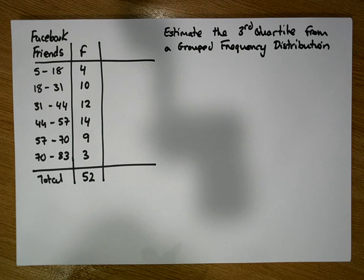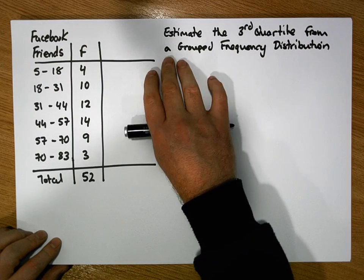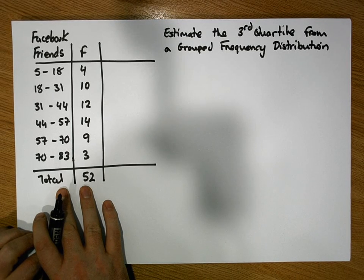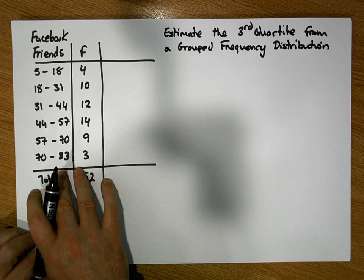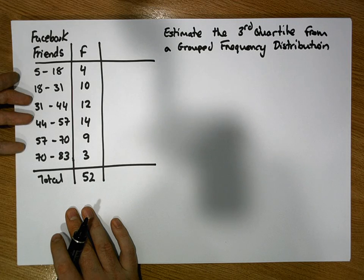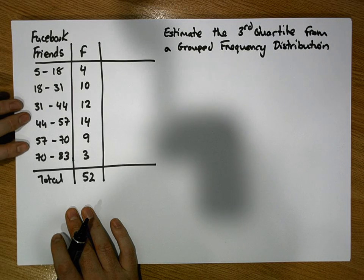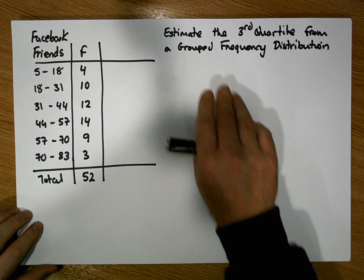Hi guys, this is Jonathan Lambert with the Mathematics Development and Support Service at the National College of Ireland. This short video is going to detail how to estimate the third quartile from a grouped frequency distribution. The distribution we're using has been used in a number of earlier videos in this series, including one that constructs it from raw data by calculating class widths and so on.